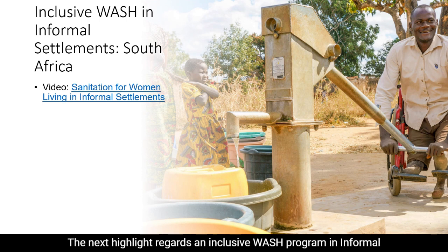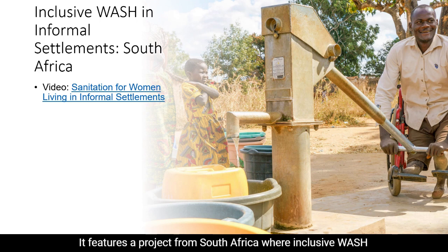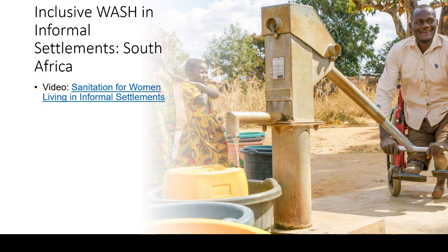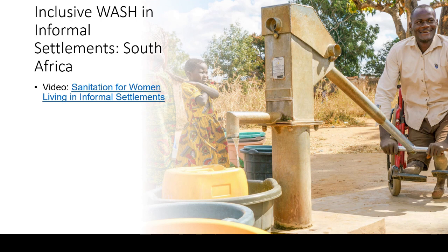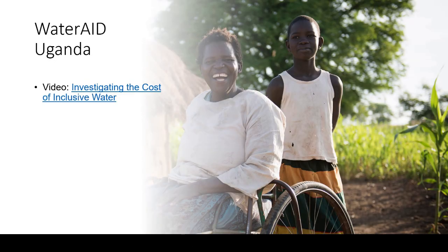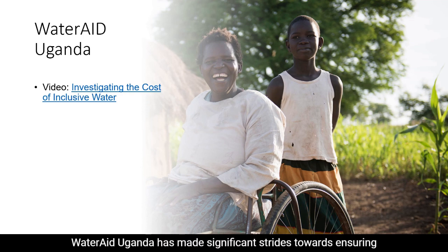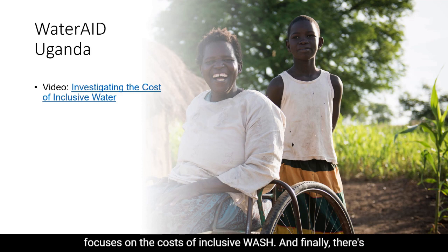The next highlight regards an inclusive WASH program in informal settlements in South Africa, featuring a project focused particularly on women living in informal settlements where water access is especially challenging. Click on the video for more information. WaterAid Uganda has also made significant strides towards ensuring disability inclusion in WASH projects; that video presents a case study focusing on the costs of inclusive WASH.